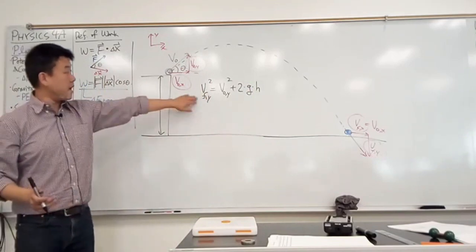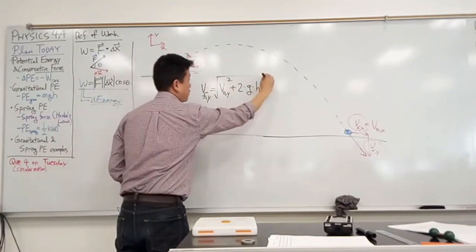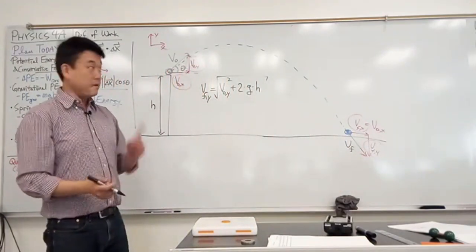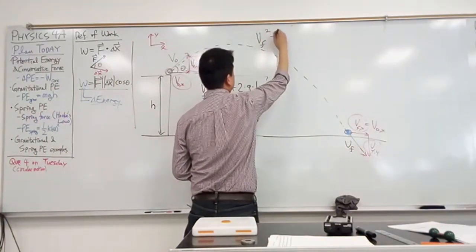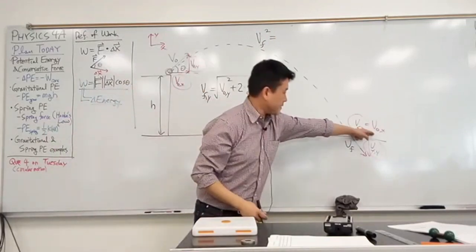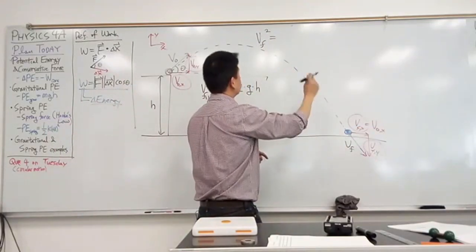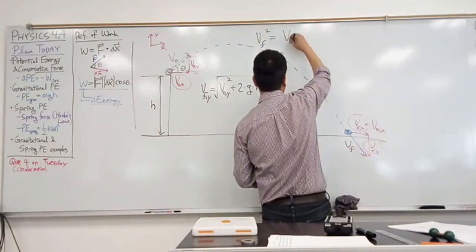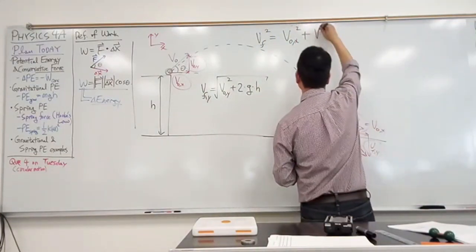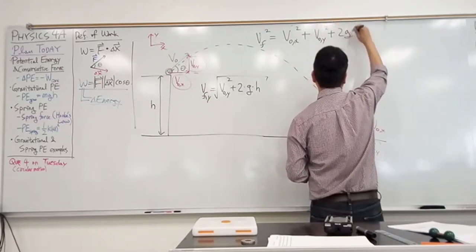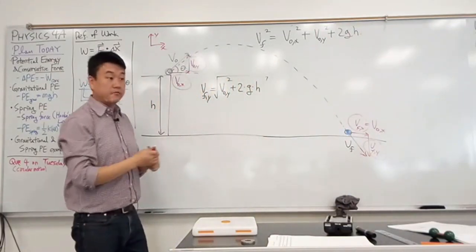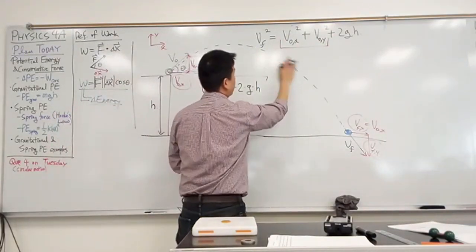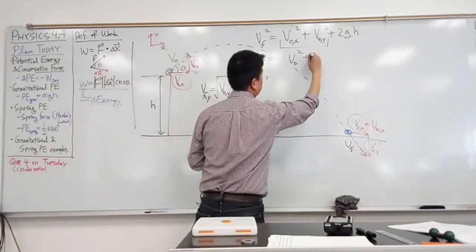Good? Alright, so that's my v-final. If I want just the component, then it will be square root of all of this. Now let me write out what the final speed v-final is using Pythagorean theorem. When I do that, this is what you get: v-final squared is equal to x-component squared plus y-component squared. So it's going to be v-naught x-squared plus this thing squared, so v-naught y-squared plus 2gh. This is where, if you recognize this, you can write it down even simpler. You can write it down as equal to v-initial squared plus 2gh.